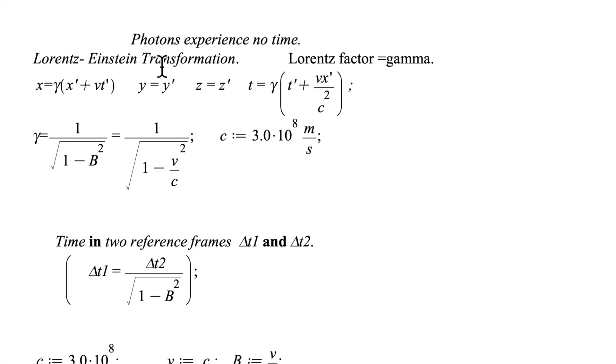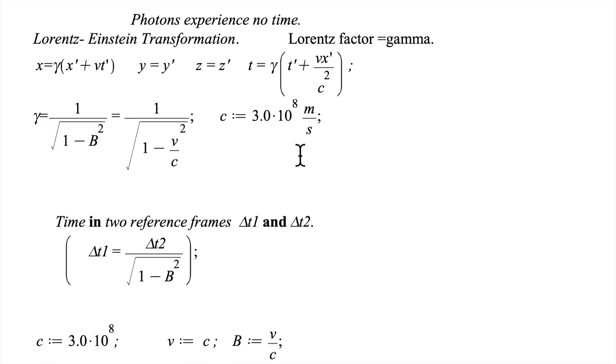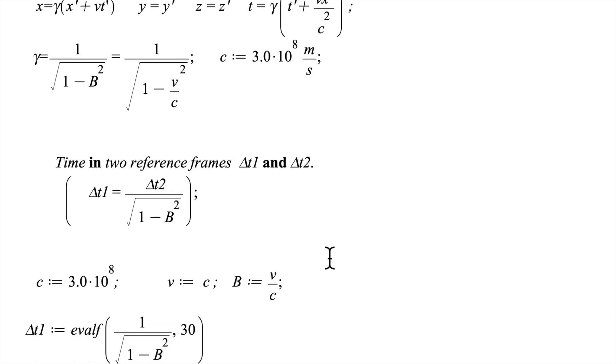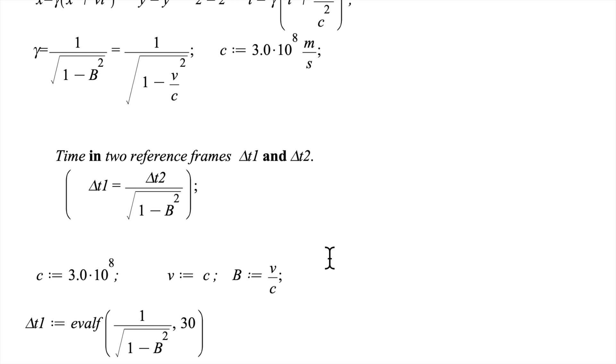Now I want to show you that light or photons experience no time. For this we need the Lorentz-Einstein transformation and the Lorentz factor gamma. Gamma is this symbol right here. If you have a particle in one reference frame, it's going to experience a different time than a particle in the second reference frame, depending on the speed that the particle is traveling. You can see this better in my other video about relativity where I did some examples on this.